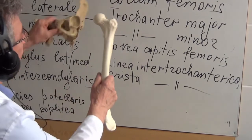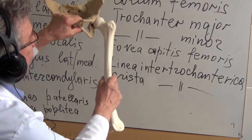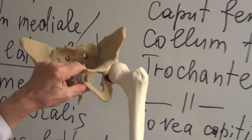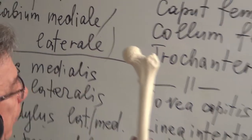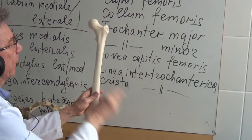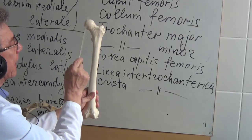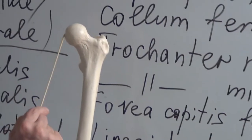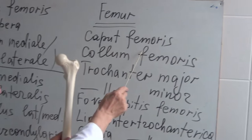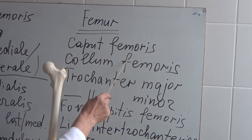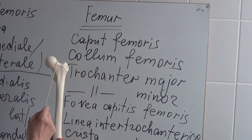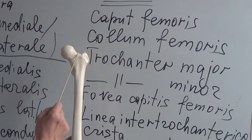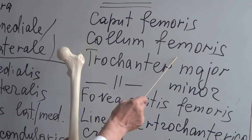The proximal epiphysis serves to make the hip joint. The structures found here include, first of all, the caput femoris — here it is — and the collum femoris.